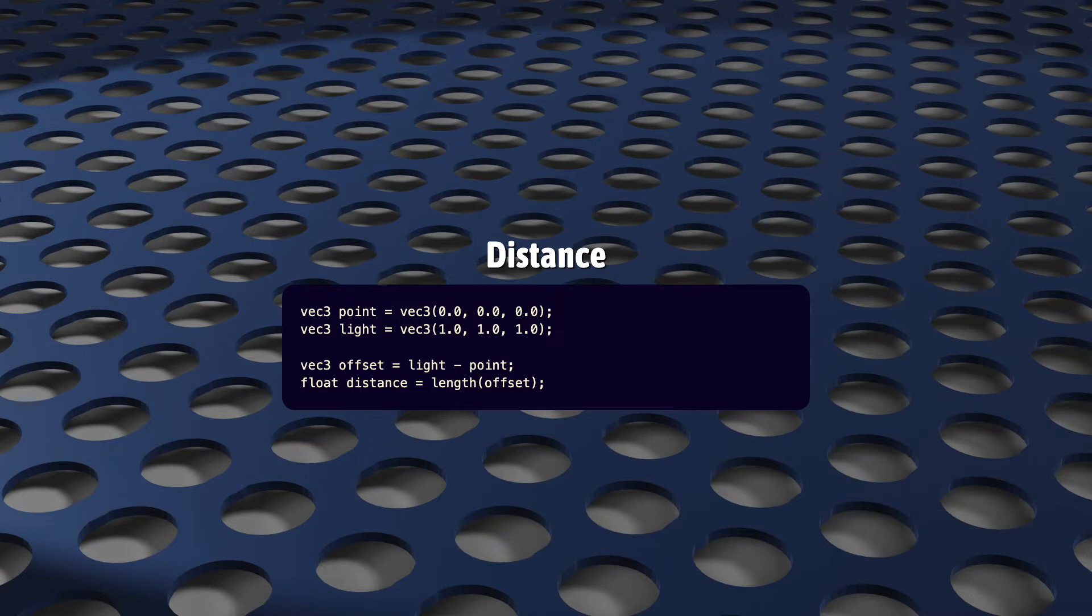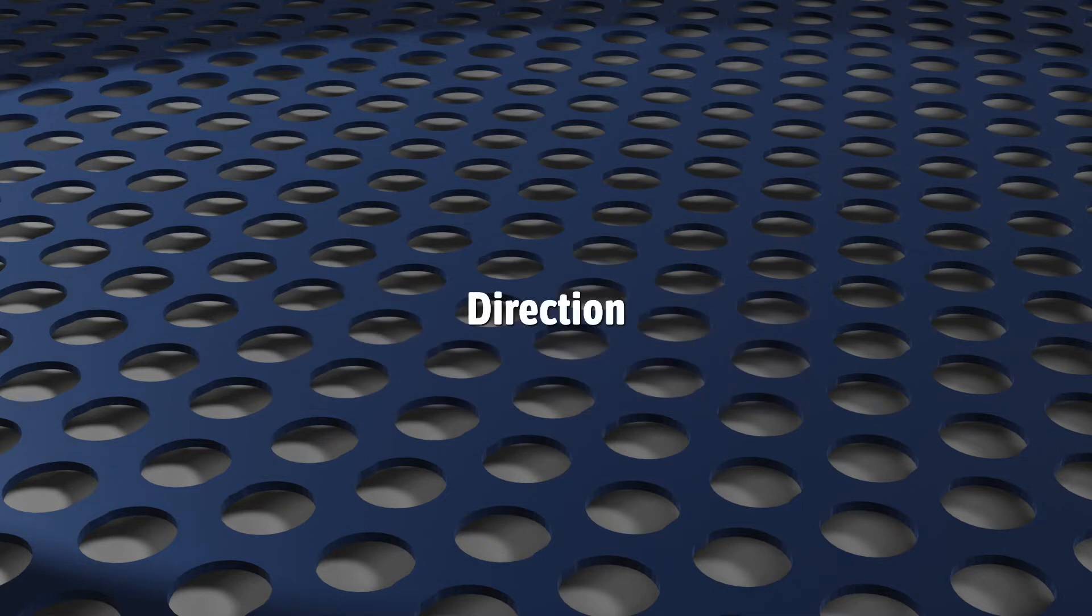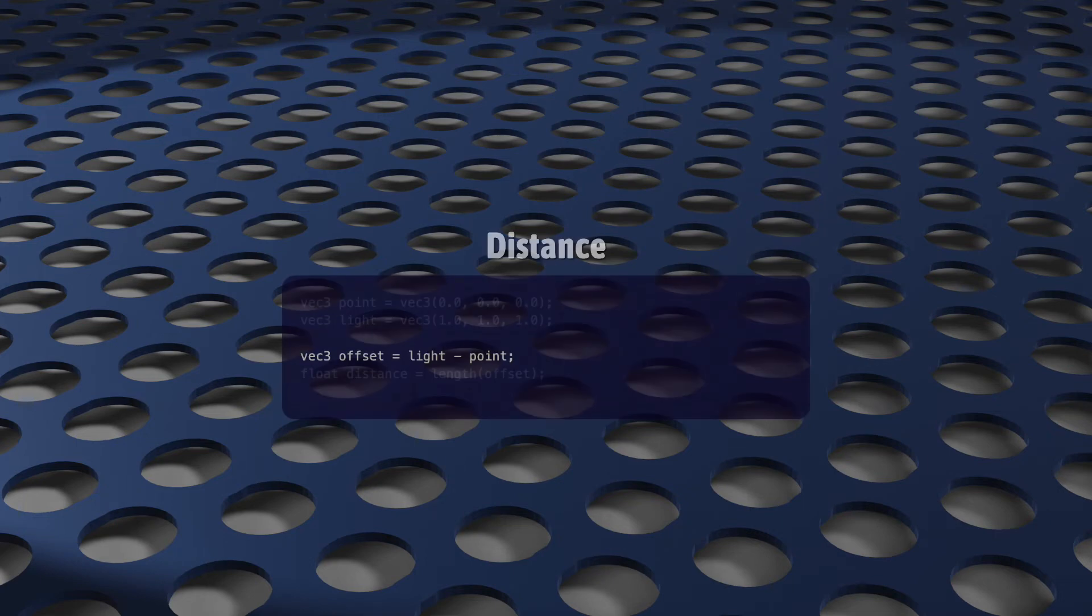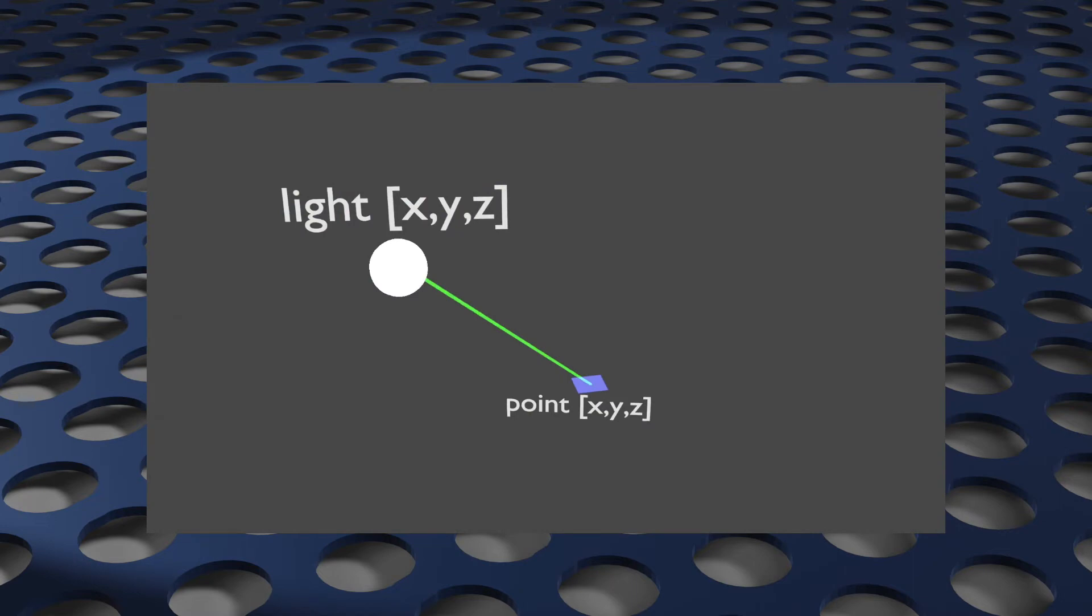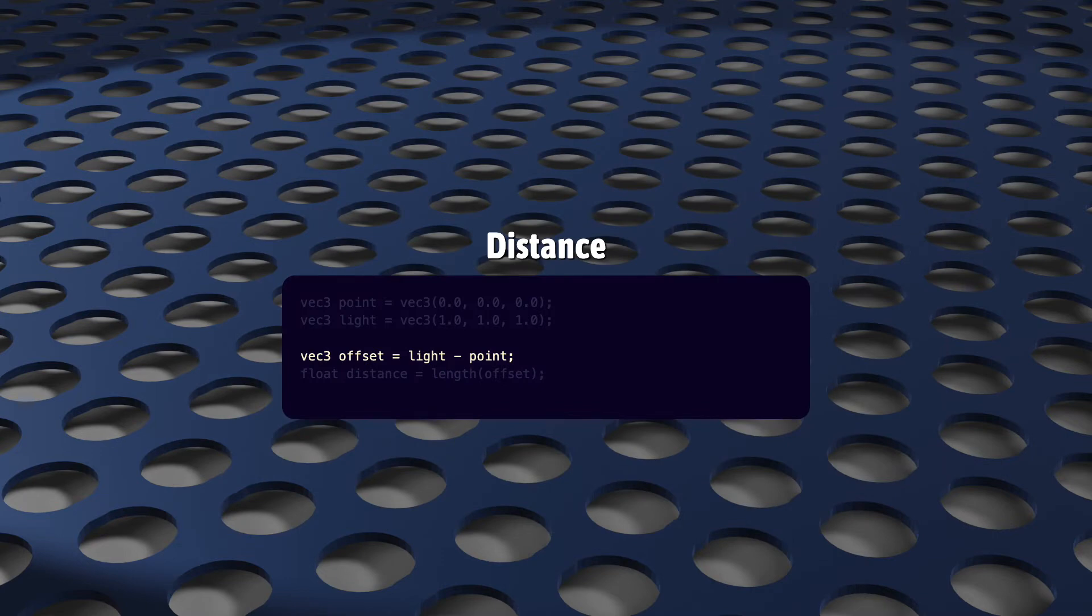So we have a distance value, so we're ready to calculate attenuation, which we'll do in a second. But first, let's figure out the direction to the light source. Except we already have that, right? Our offset was calculated as the vector from the surface position to the light, so it's definitely pointed in the right direction. Only we need a unit vector. Its length has to be exactly one. So we just normalize it. So we have our distance, and now we have our direction.